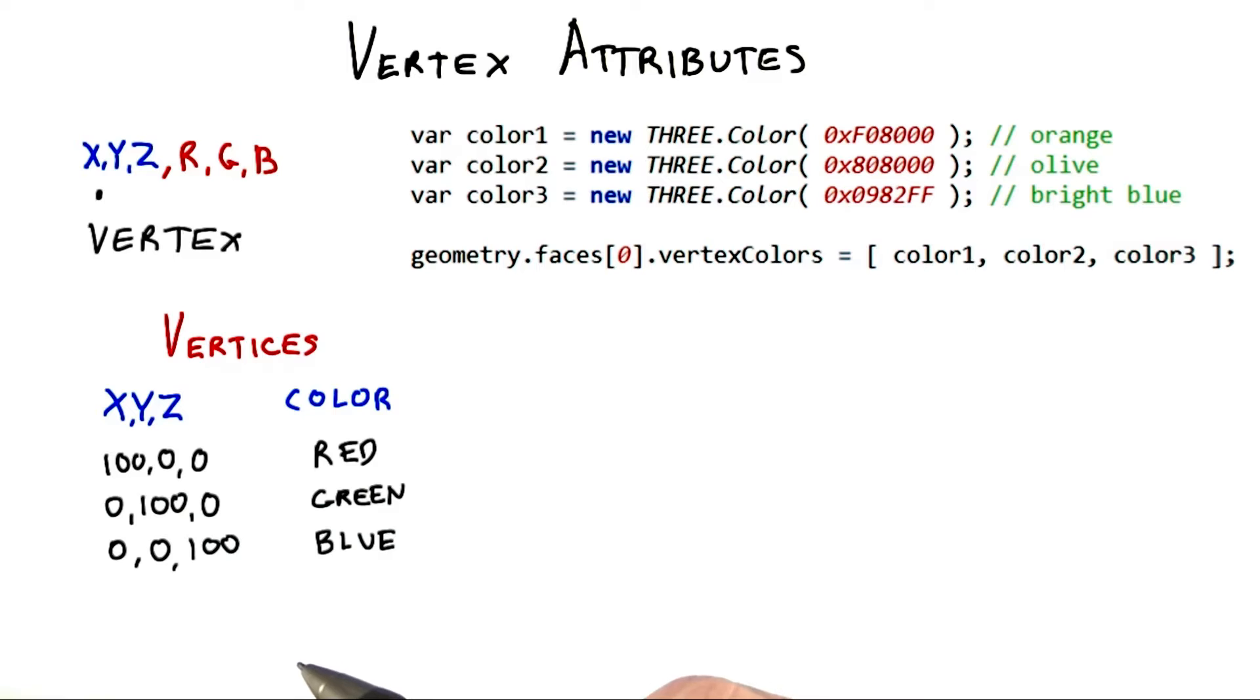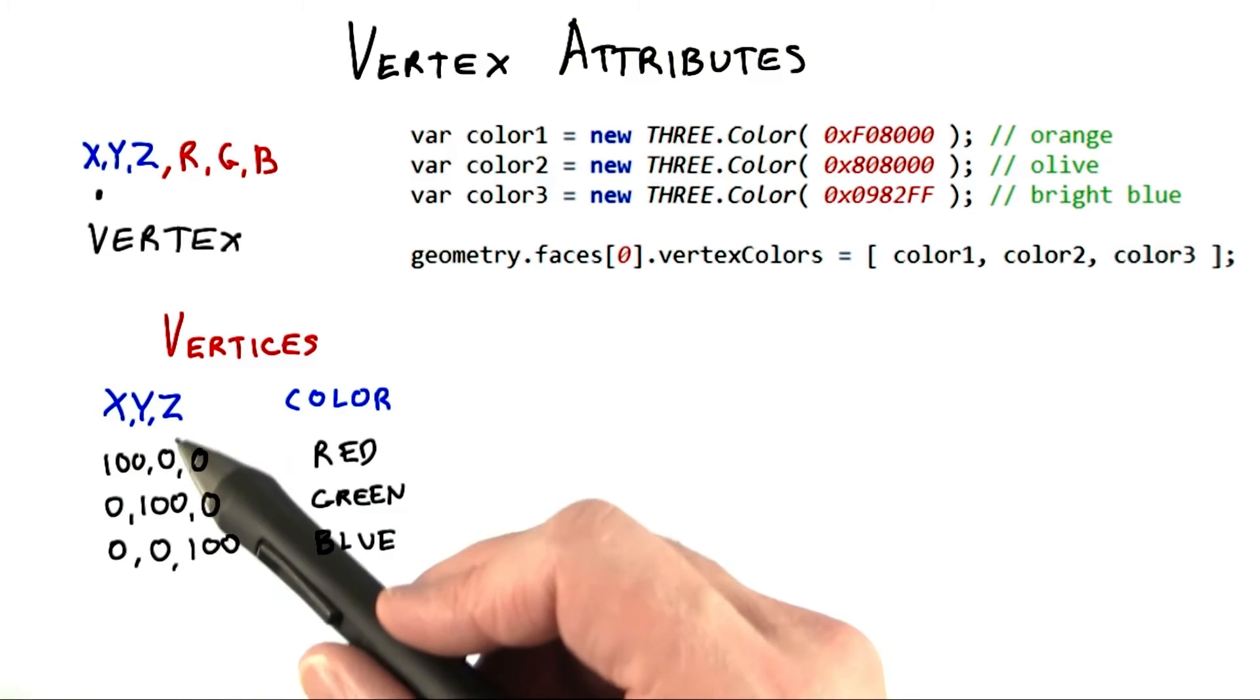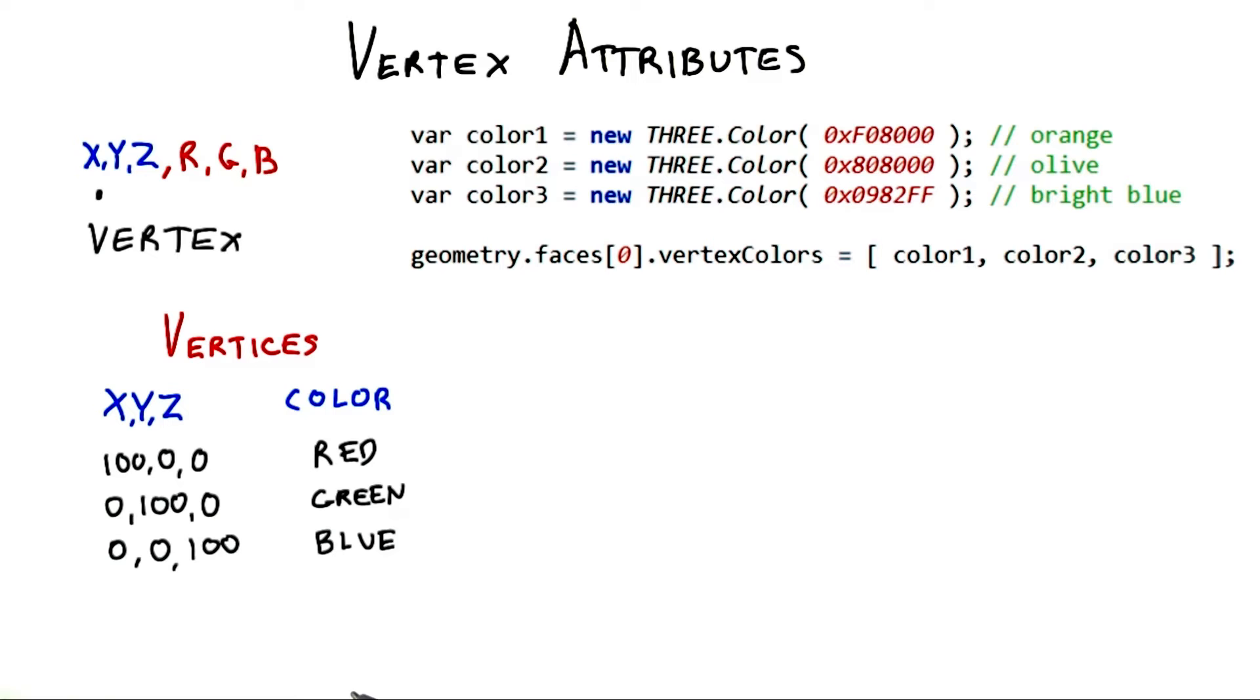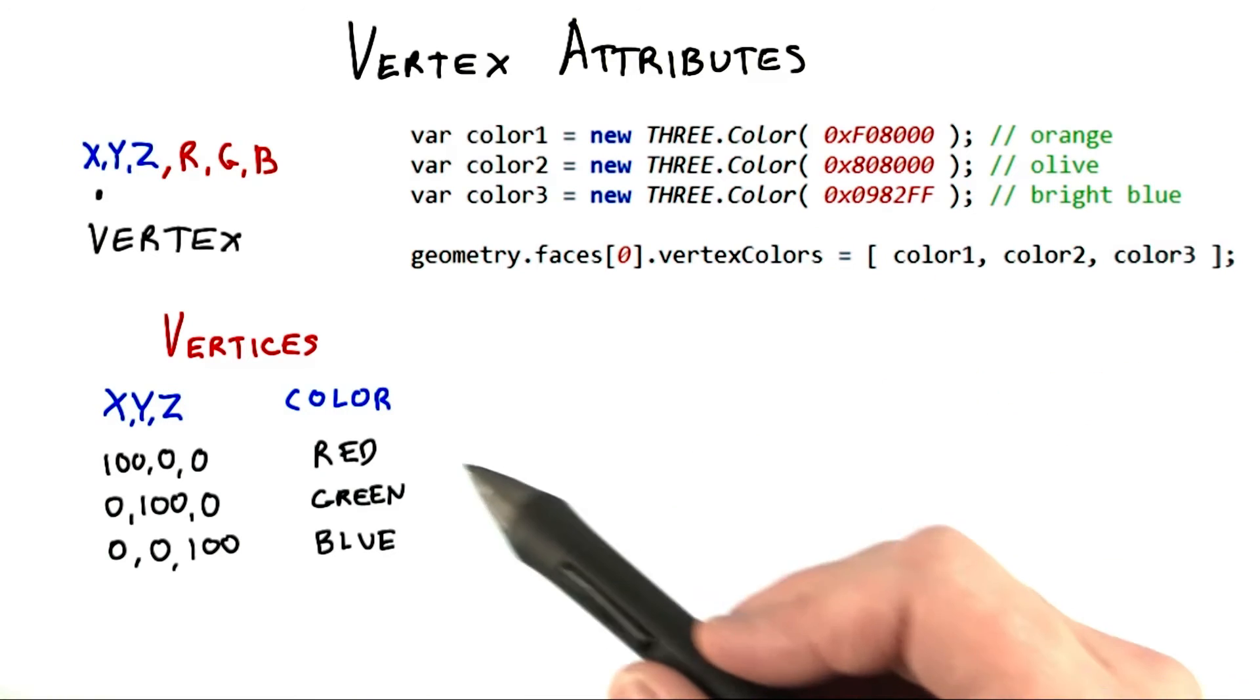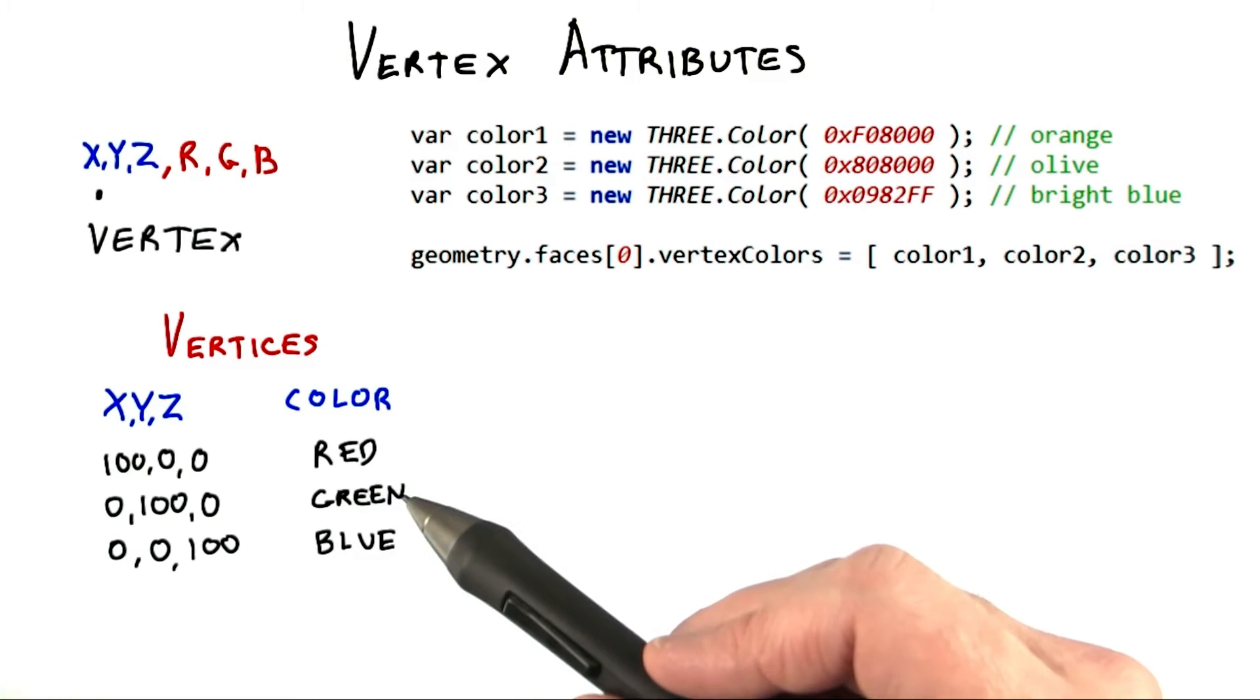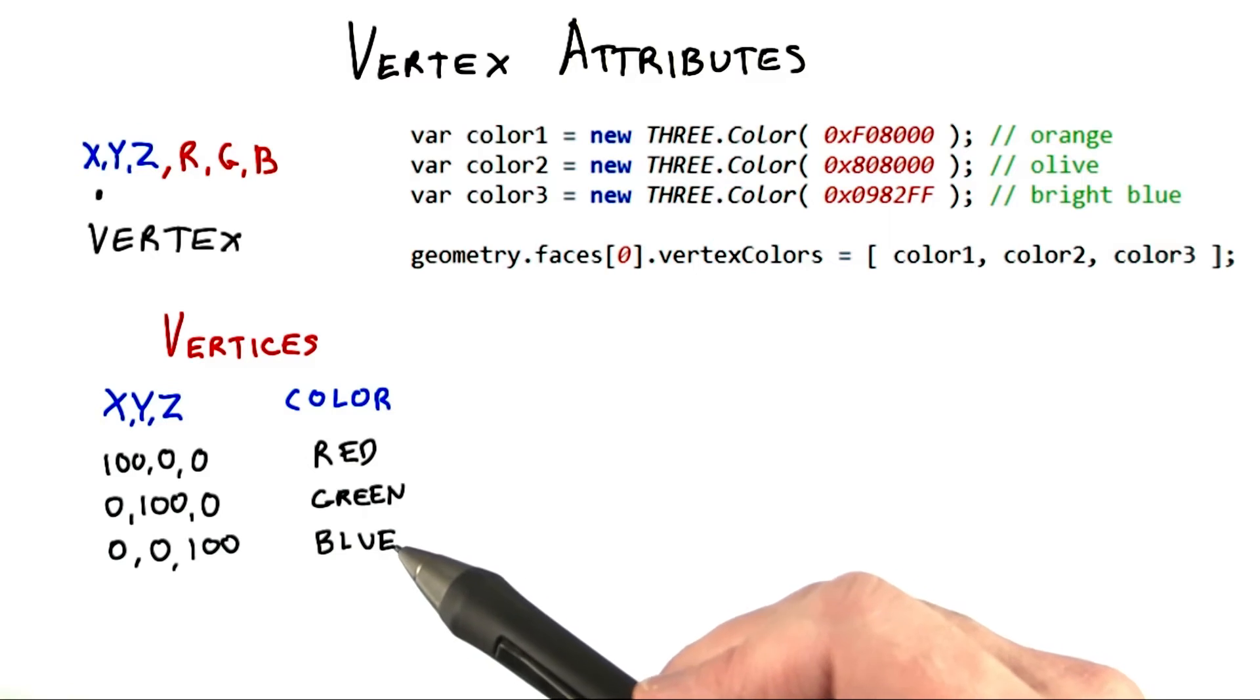Your task in this exercise is to make a triangle with three vertices at these locations and with these colors attached. Instead of these colors in the example code, add a full red color to the first vertex, a full green to the second, full blue to the third.